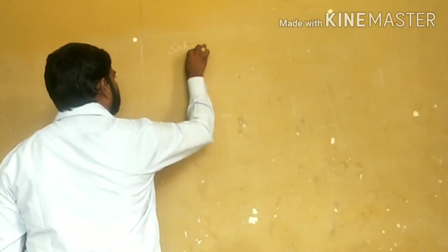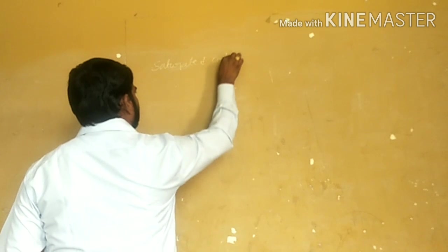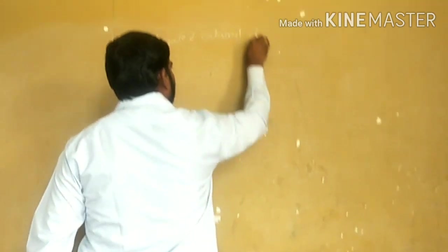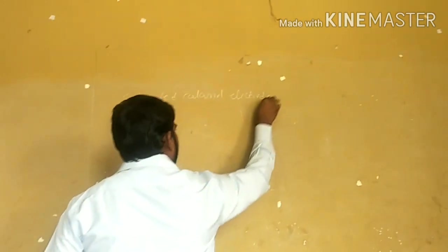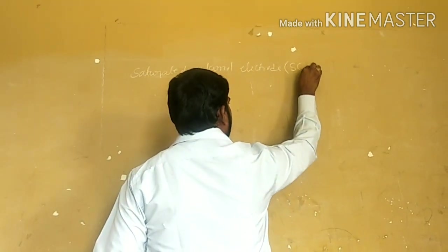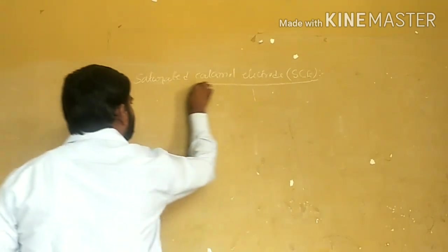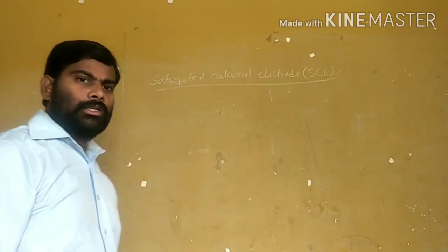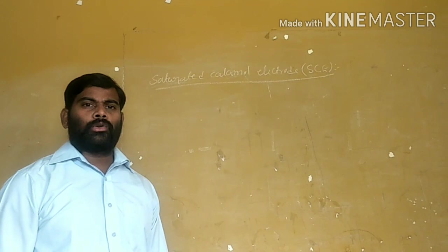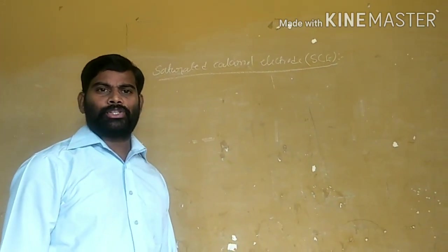In the previous video, I explained one of the reference electrodes, the hydrogen electrode. Today, I am going to explain the second reference electrode: the saturated calomel electrode, simply written as SCE. This saturated calomel electrode is also called the mercury-mercurous chloride electrode.